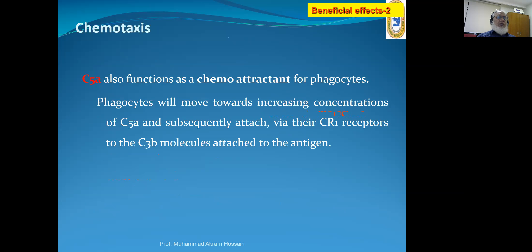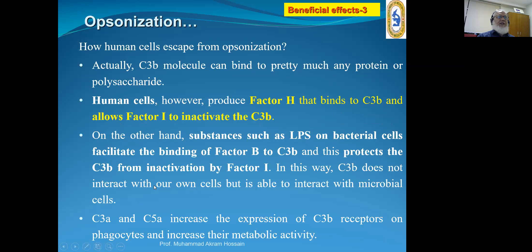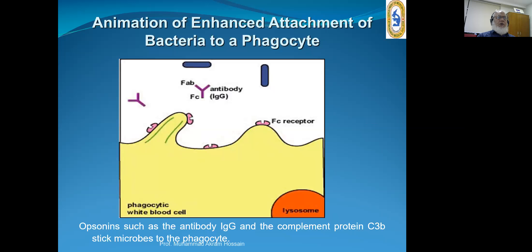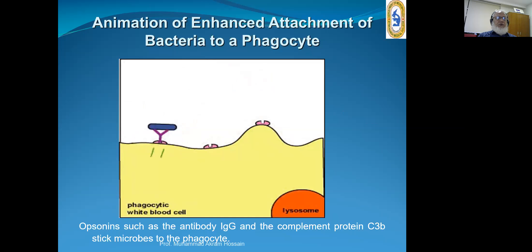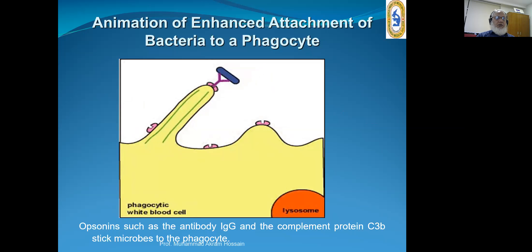Chemotaxis: C5a functions as a chemotactic molecule. Opsonization — that is enhanced phagocytosis — is promoted by C3b and C4b, which can function as opsonins. One portion of C3b binds to the microbial surface and another portion binds to CR1 receptors on phagocytes, B-lymphocytes, and dendritic cells for enhanced phagocytosis. The animation shows how complement C3b enhances phagocytosis, similar to how immunoglobulin G enhances phagocytosis.